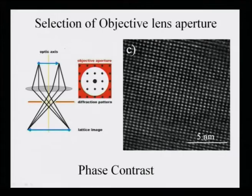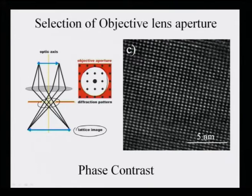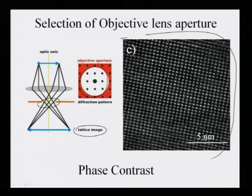The second sort of imaging process is when all diffracted and transmitted beams are allowed to interfere to form what is known as a lattice fringe or lattice image. One puts a larger aperture in the diffraction pattern selecting many diffraction spots along with the transmitted spot — for example, 9 diffraction spots — to form this kind of phase contrast image. This is the second set of image formation, which is done routinely in electron microscopes nowadays because of the advent of high-quality microscopes.